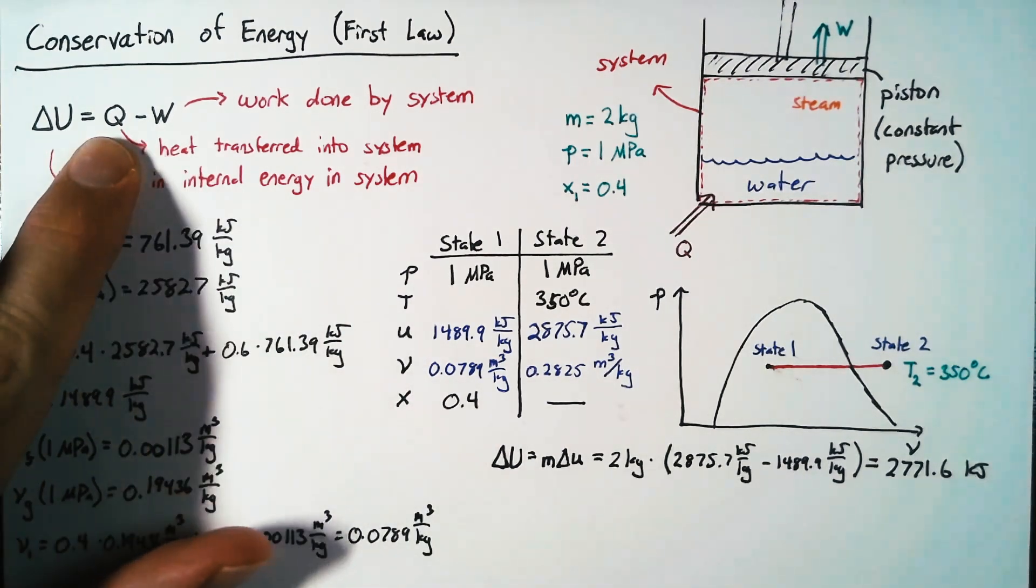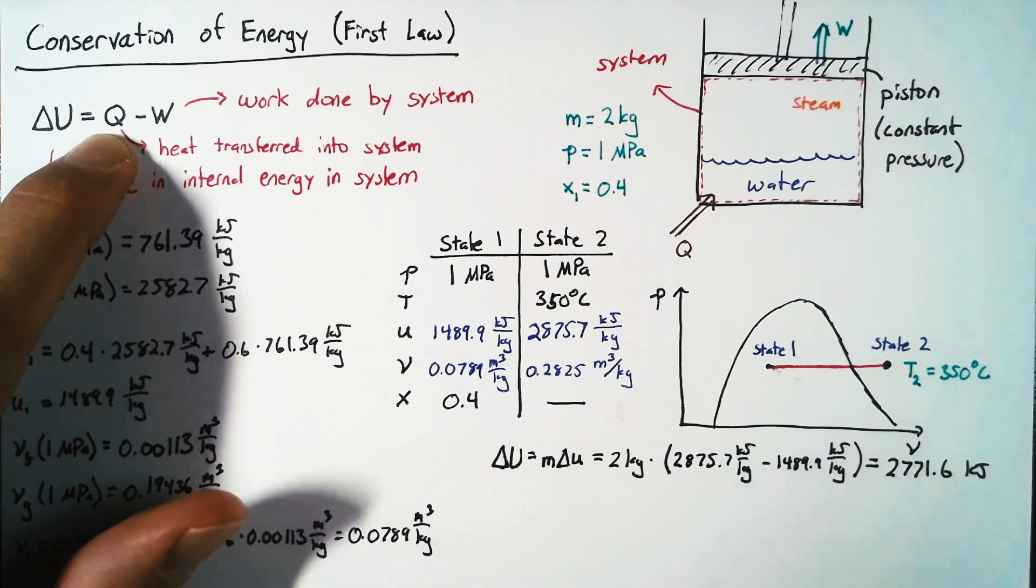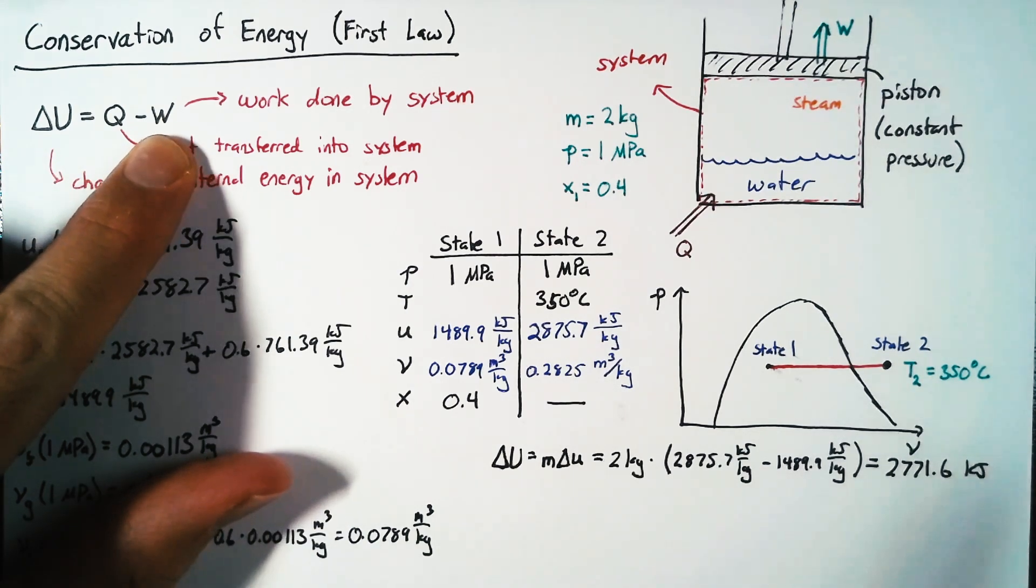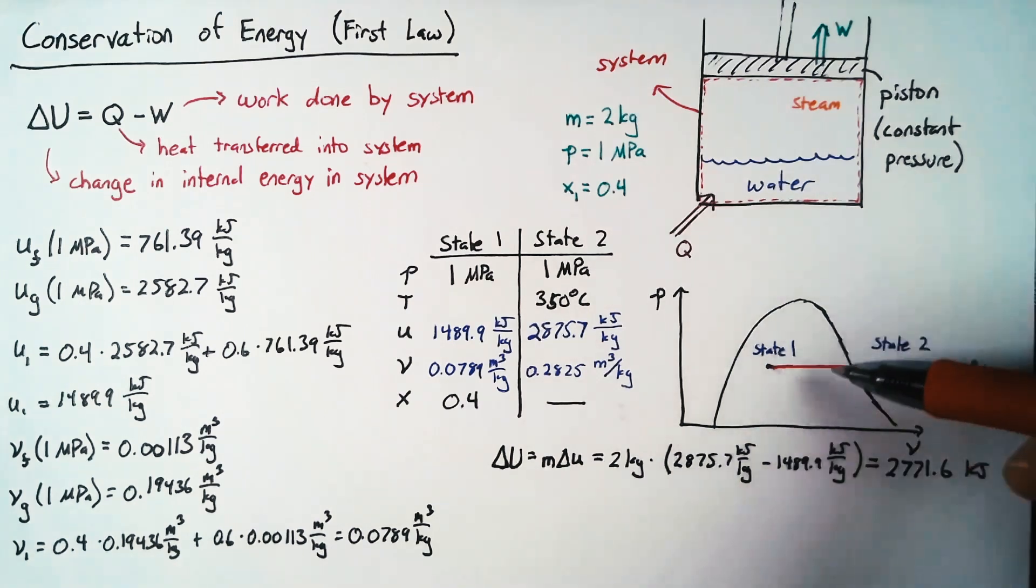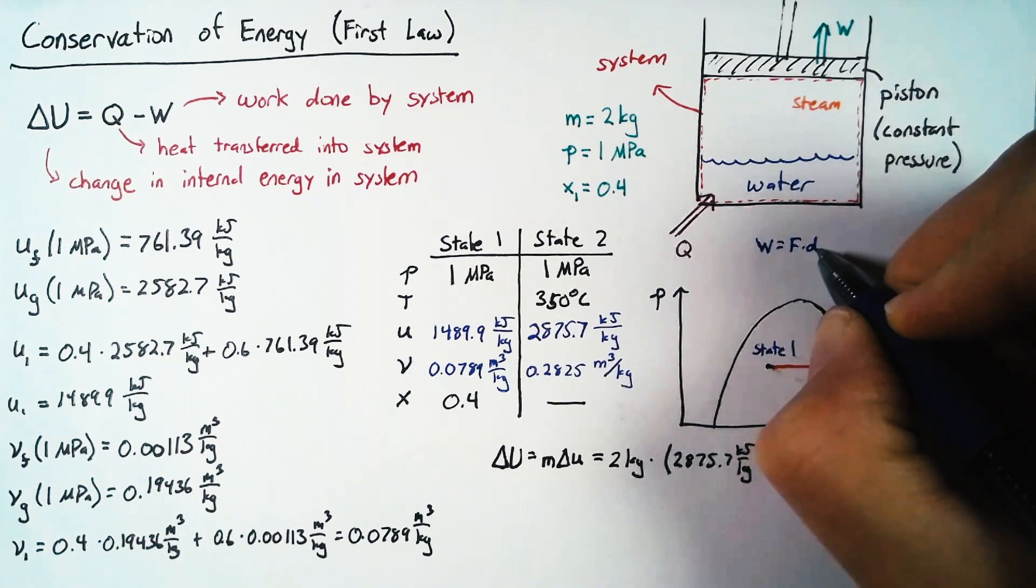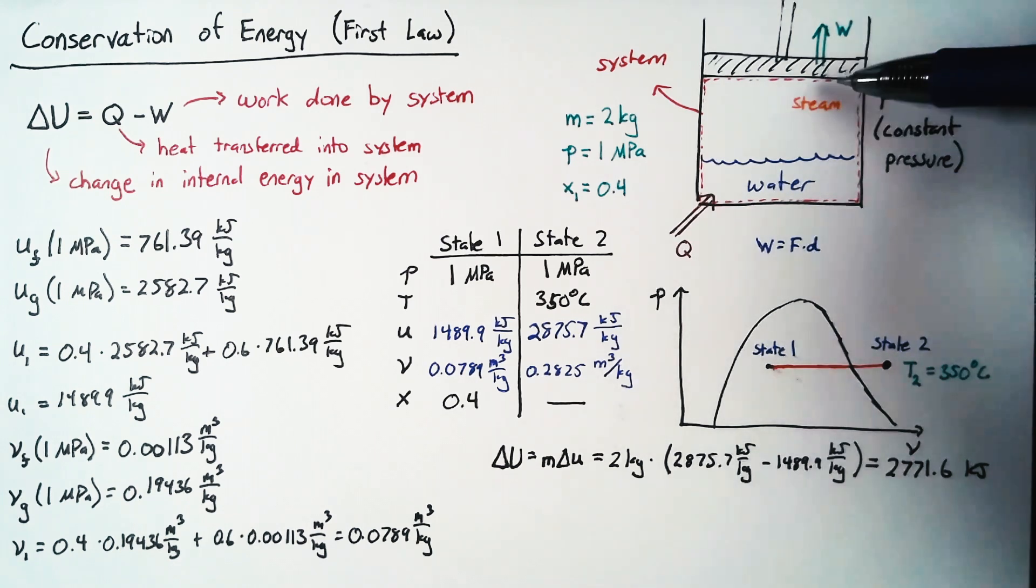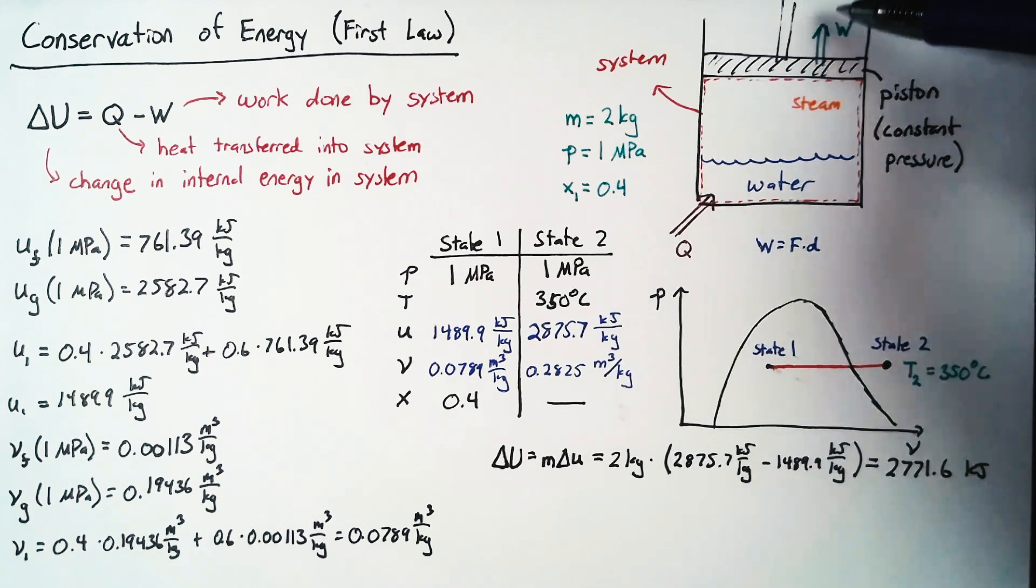Now, like I said, we're not going to go any deeper in order to figure out what our Q value is. Instead, we're going to figure out what the work done by our system is. And we can actually think about that pretty well from our PV diagram. Because we know that work is equal to our force multiplied by our distance. In this case, we're thinking about the force that our piston is applying and multiplied by the amount of distance that it's moving.